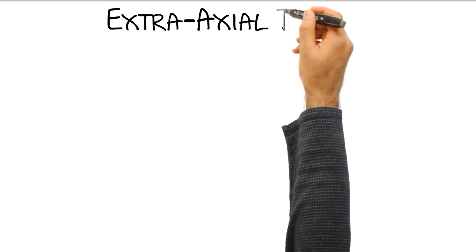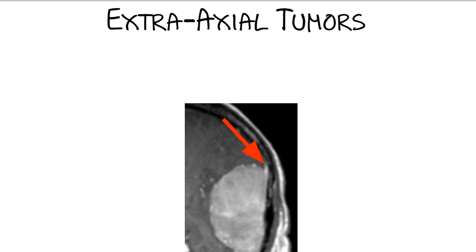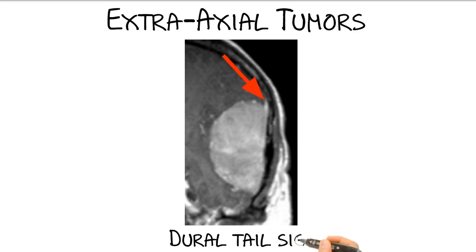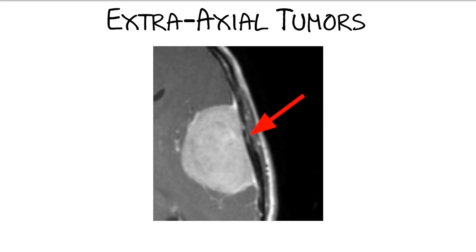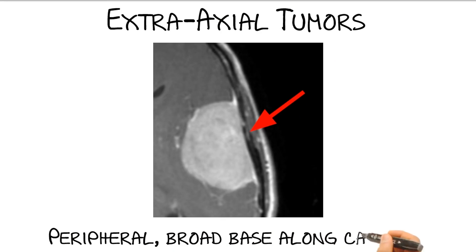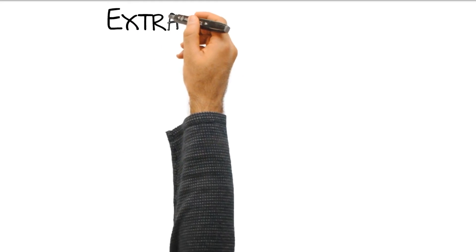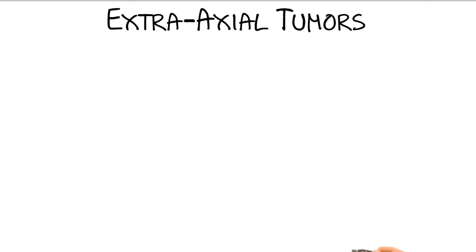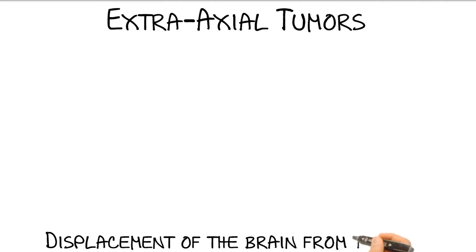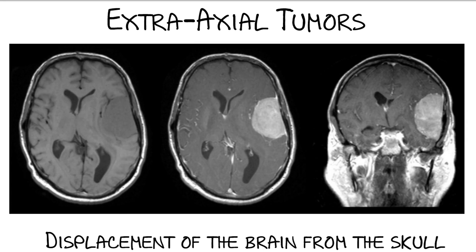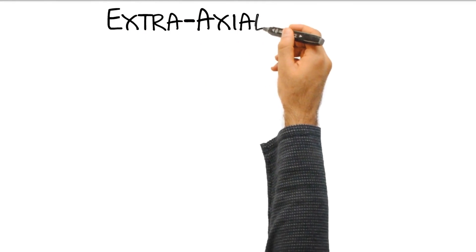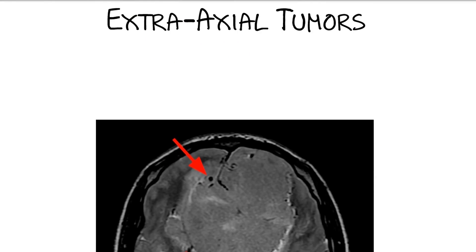In the next slides, you will find multiple features that can be found in extraaxial tumors. Number 1: the dural tail sign, with enhancement of the adjacent meninges. Number 2: peripheral broad base along the calvarium and dura — in this case there may also be overlying bone changes. Number 3: displacement of the brain from the skull, with subarachnoid space widening and white matter buckling — the cortex will be intervening between the mass and white matter. Number 4: vessels interposed between the brain and the lesion.